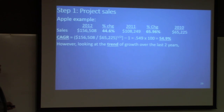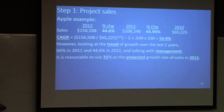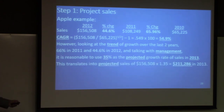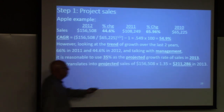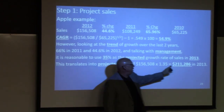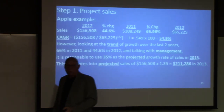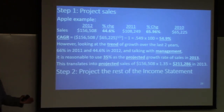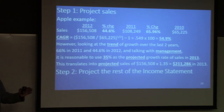So we look at the last two years, then we talk with management. Guess what management tells us? They feel comfortable with a 35% growth rate. So we add one plus our growth rate, times last year's number, and we get next year's number. There's our sales forecast. Now that we have our sales forecast, we're going to project the rest of the income statement, and we'll do that in the next clip.